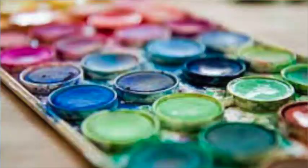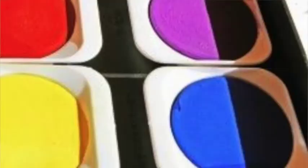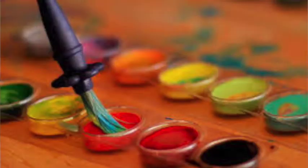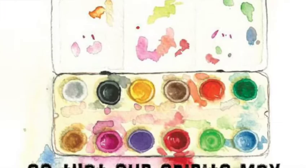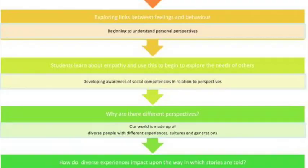Drawing and painting — mark making — is one of the first ways humans are able to communicate with the rest of the world. For young children, it is usually their first attempt at art making and is emotionally satisfying. Visual arts can be a direct expression of what we see through our own eyes, whether through drawing from observation or using photography. As the unit progresses, students learn about empathy and use this to begin to explore the needs of others, developing awareness of social competencies in relation to perspectives.